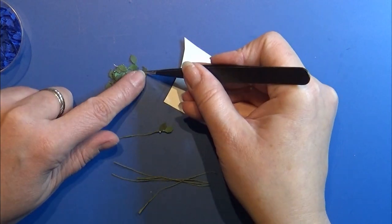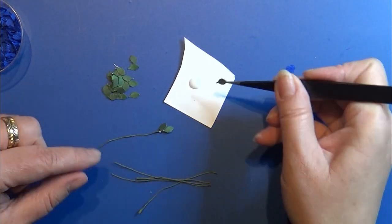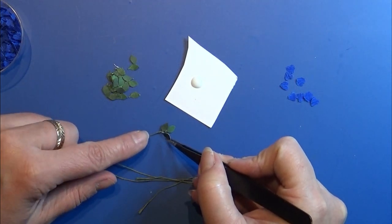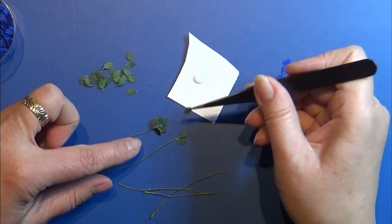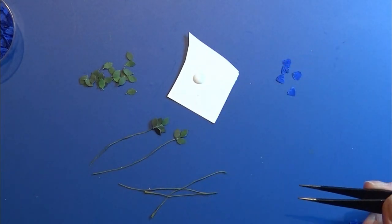I'm making two pieces of wires with three leaves on there and two pieces of wire with five leaves on. Let the leaves dry and we can make the roses while we wait.